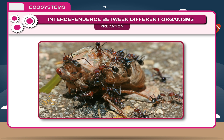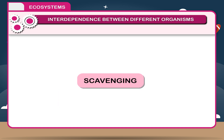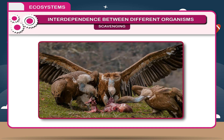Predation is a kind of direct food relationship between two species of animals in which one is called the predator, who captures and eats the prey. Scavengers play a very important role in the ecosystem as they clean the environment by eating the dead and decaying bodies of other animals.